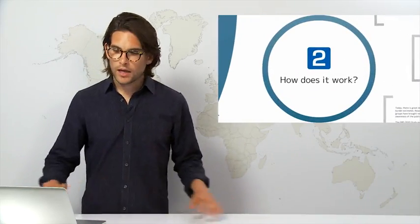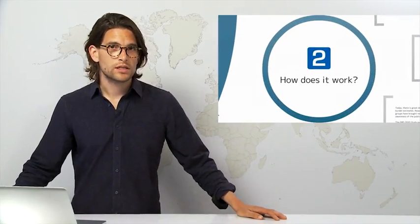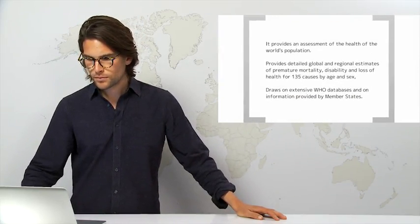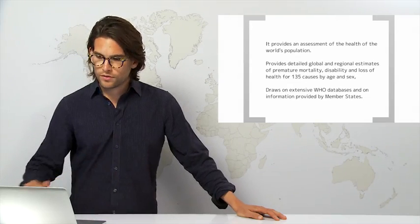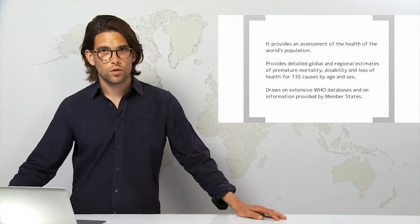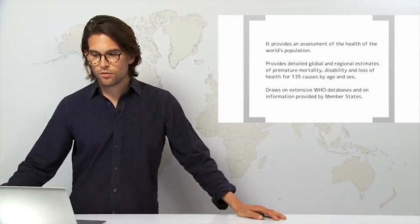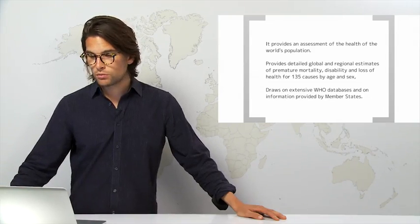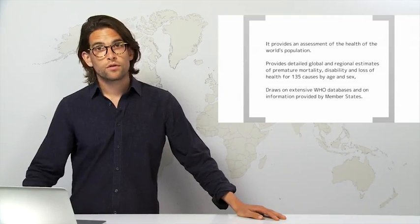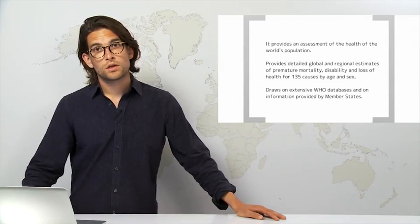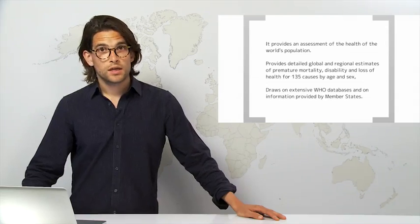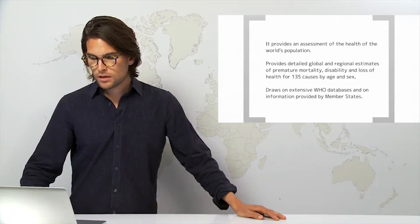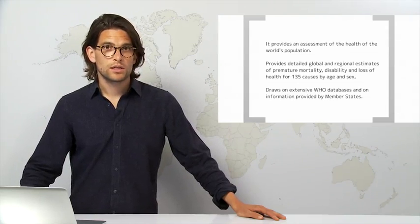So let's have a look now at how the GBD study works in some more detail. First of all, the GBD studies provide an assessment of the health of the world's populations. They provide detailed regional and global estimates for premature mortality, disability and loss of health for 135 causes by age and by sex. They draw on extensive WHO databases and on information provided by the member states.